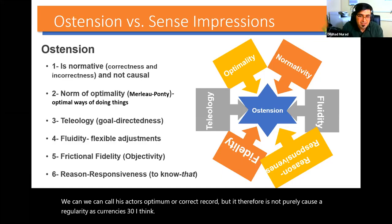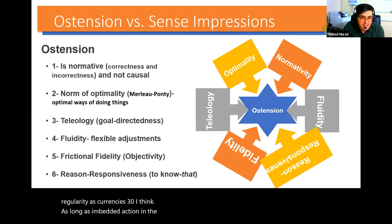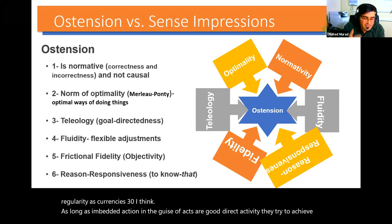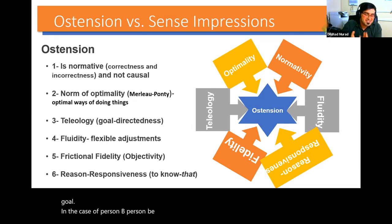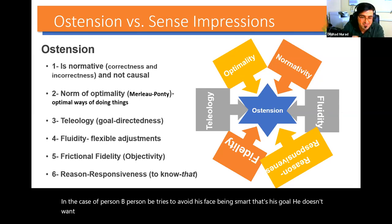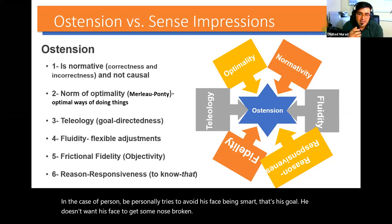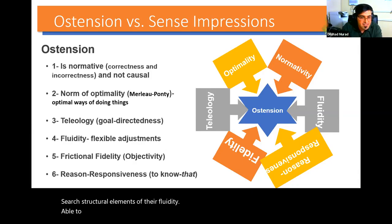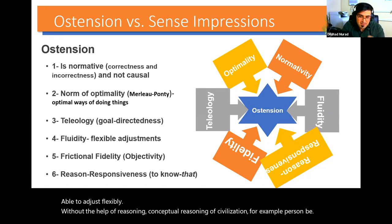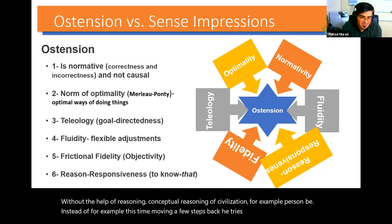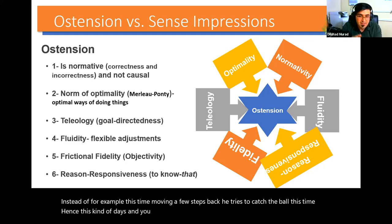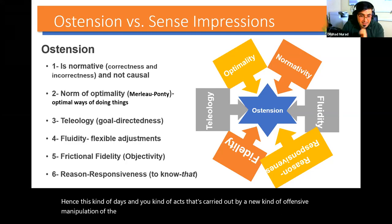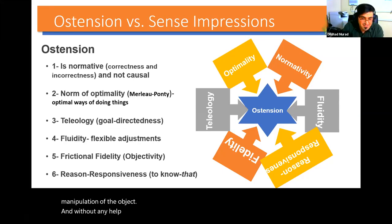Thirdly, embedded action in the guise of ostensive acts is goal-directed activity — it tries to achieve a goal. In the case of person B, he tries to avoid his face being smashed; that is his goal. Fourthly, ostensive acts are characterized by a structural element of fluidity. Merleau-Ponty talks about the fact that bodily movements are able to adjust flexibly to variation in circumstance without the help of conceptual reasoning or conceptualization. For example, instead of moving a few steps back, person B tries to catch the ball — a new kind of act carried out by a new kind of ostensive manipulation of the object, without any help of conceptualization.